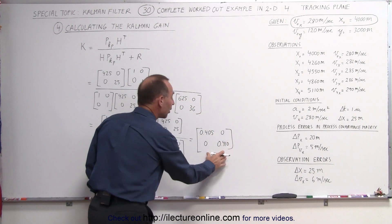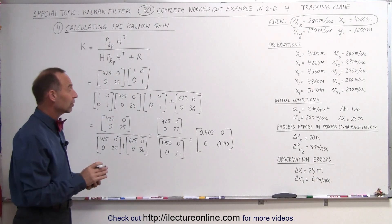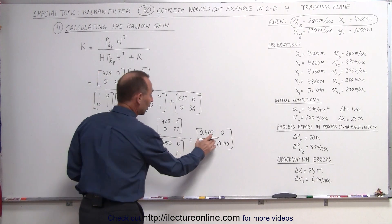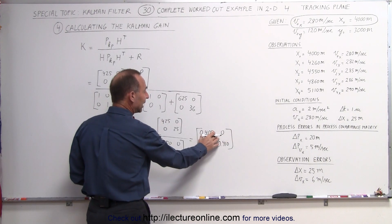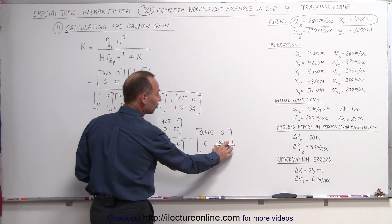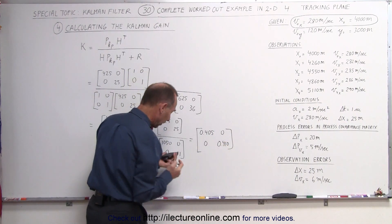Now this is what we call the Kalman gain matrix. It's going to adjust the measurement that we get from the observations in the position and it's going to adjust the measurement we get from the observation and velocity.